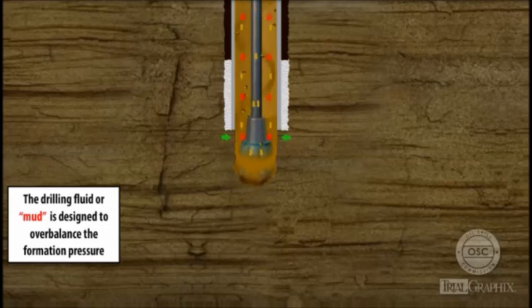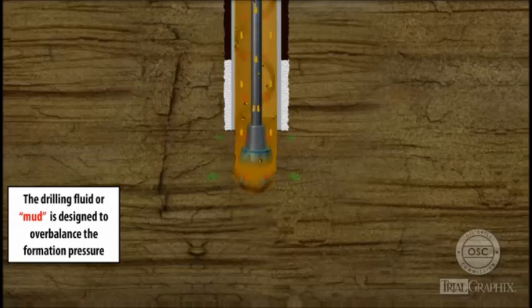As rig crews drill ahead, they use drilling mud to balance pore pressure. The mud circulates down through the drill string and back up the casing to the rig.